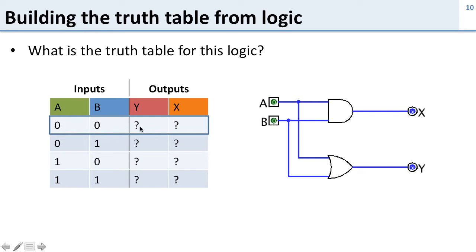Let's take a look at our first row. We've got inputs A and B both zero. If A is zero, it's going to put zero going into the AND gate and zero going into the OR gate. If B is zero, it's also going to send zero to the OR gate and the AND gate.